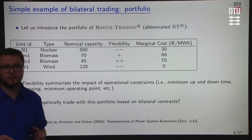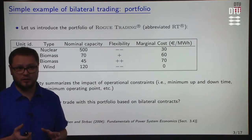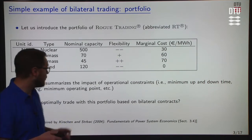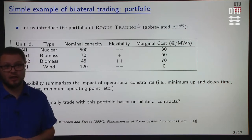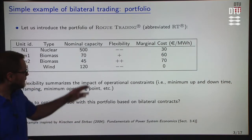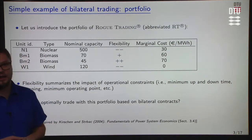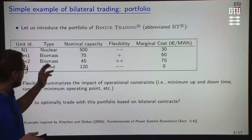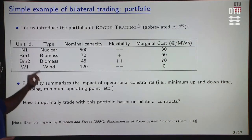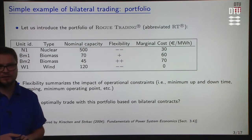If we were to characterize the flexibility of these units, there are two categories. Nuclear and wind are not very flexible for different reasons. A nuclear power plant — you may not be able to change the set points every minute. And for a wind farm, you get the energy as it comes, meaning when the wind blows, you get energy from your wind turbines and you can't just turn a button to get more or less wind power. So these two types of assets are not flexible. For the two biomass units, they are more flexible than the nuclear and wind assets, and BM2 is more flexible than BM1.